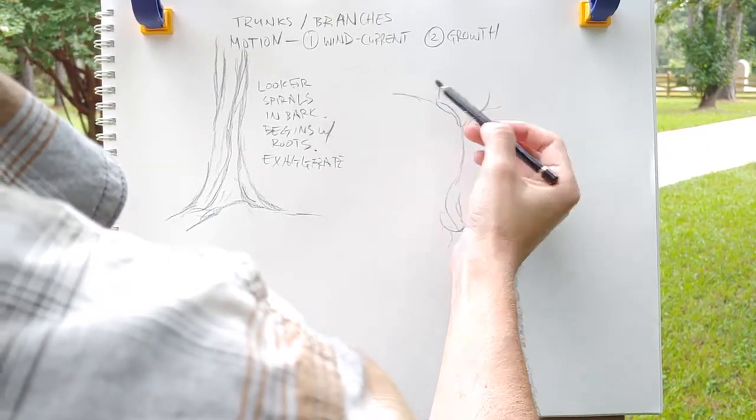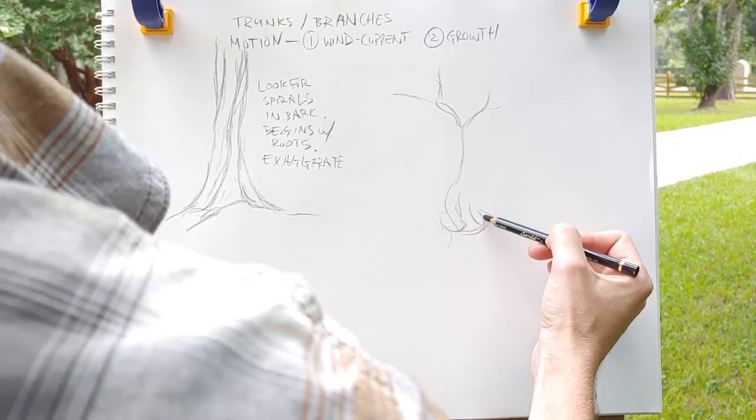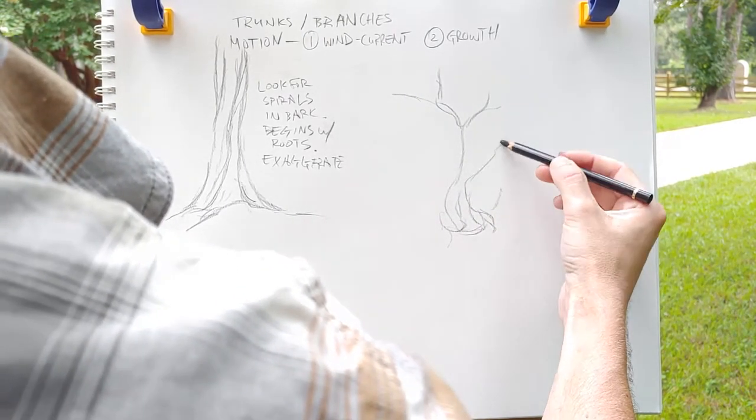And you want to exaggerate that sort of motion. And when you find that, it's easier to figure out how the branches branch off.